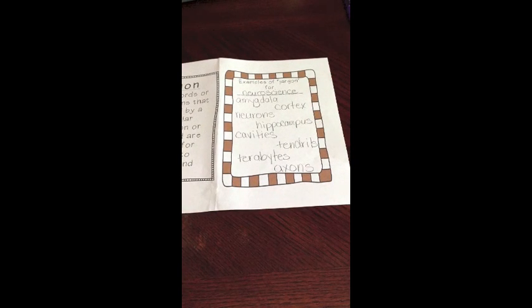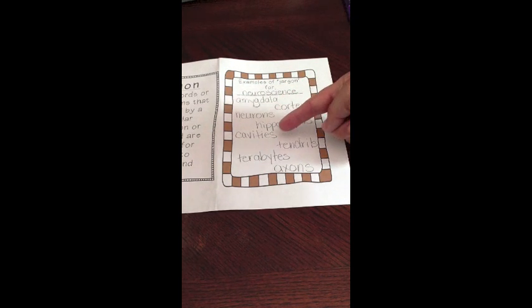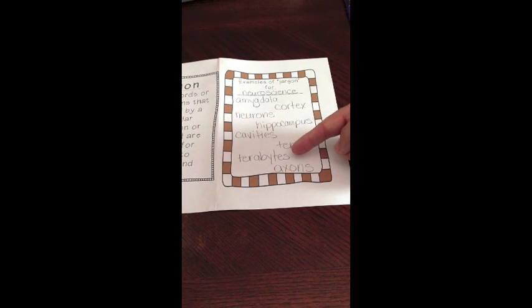Here are some examples of jargon for the study of neuroscience. Amygdala, cortex, neurons, hippocampus, cavities, tendrils, terabytes, and axons.